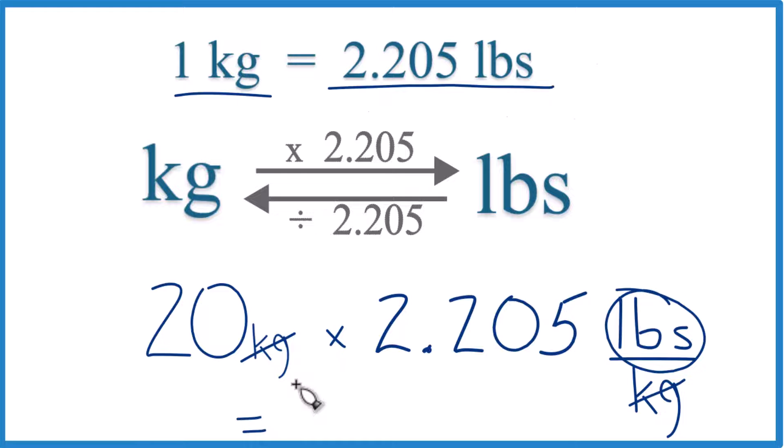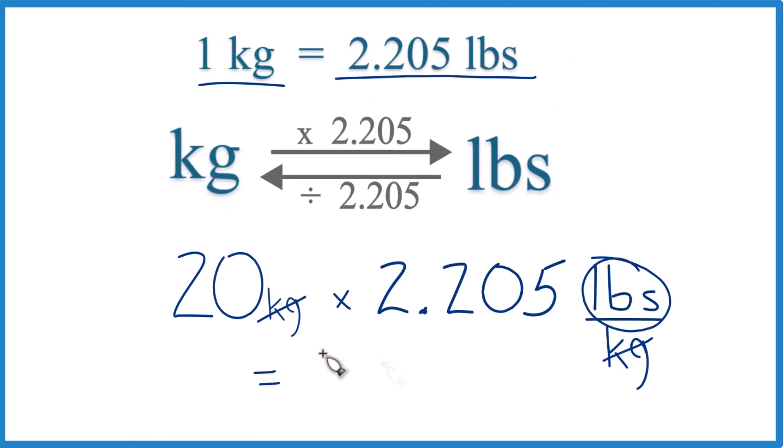So 20 times 2.205 gives us 44.1. And the units are pounds. That's all that's left.